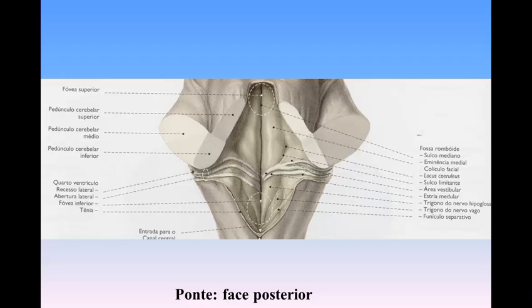Below the inferior fovea, between the trigonum hypoglossi and the lower part of the area acoustica, is a triangular dark field, the ala cinerea, which corresponds to the sensory nucleus of the vagus and glossopharyngeal nerves. The lower end of the ala cinerea is crossed by a narrow translucent ridge, the funiculus separans, and between this funiculus and the clava is a small tongue-shaped area, the area postrema. On section, it is seen that the funiculus separans is formed by a strip of thickened ependyma, and the area postrema by loose, highly vascular neuroglial tissue containing nerve cells of moderate size.